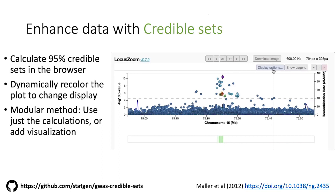I'm going to talk briefly about some of the statistical work we've done for LocusZoom in the portal. The first is this idea of calculating credible sets. The goal would be to show which variants in the region would be in the 95% credible set. We implemented this existing method from Mallor et al. 2012, which lets us calculate the posterior probability of inclusion in the credible set just from the p-values available in the region, so we don't need any extra information.